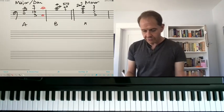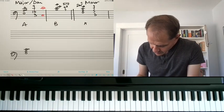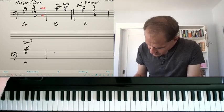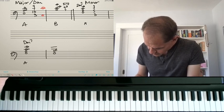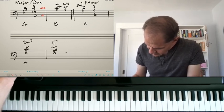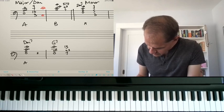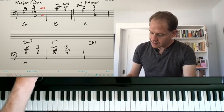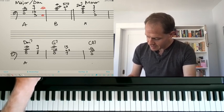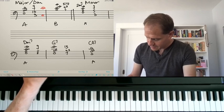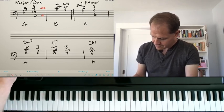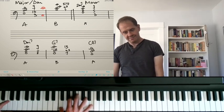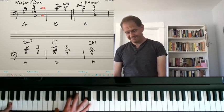So if we're doing a 2-5-1 using these four note voicings, it might look something like this. If it's A, B, A. Here's D minor 7. G7. This is 7, 9, 3, 13. This is 3, 5, 7, 9. And then C major 7 goes back to type A. It's pretty sexy.